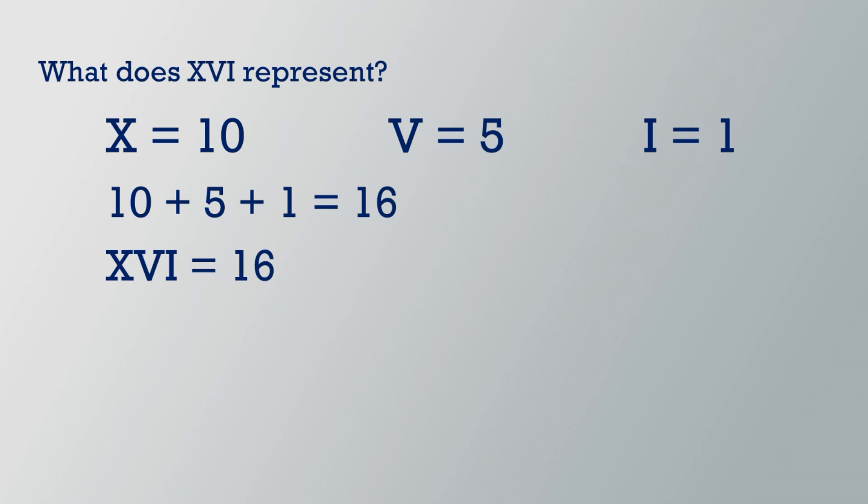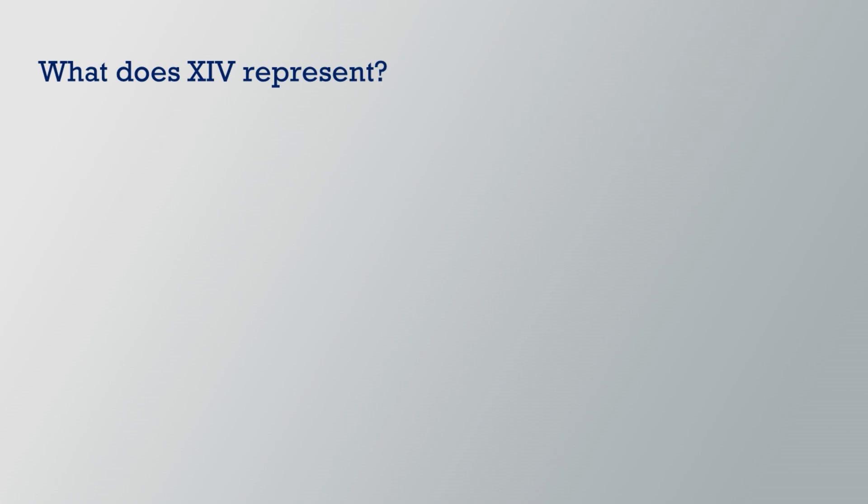Let's try another. What does XIV represent? The symbols in this example are the same as the previous example, but they are in a different order. X equals 10, I equals 1, and V equals 5. Notice that the smaller value, I, is to the left of the larger value, V. That means we'll need to subtract the value of I, which is 1, from the value of V, which is 5.